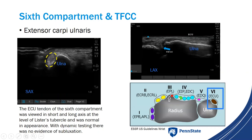Moving on, we evaluate the sixth compartment — the extensor carpi ulnaris tendon — in short axis along the ulna. You can also test for ECU subluxation dynamically, especially if the patient is symptomatic on that side. This patient was not symptomatic there, but we still tested. In my report: 'The ECU tendon of the sixth compartment was viewed in short and long axis — normal in appearance — and with dynamic testing there was no evidence of subluxation.'